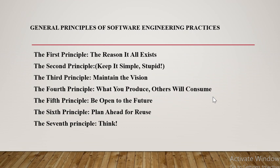To recap: the first principle is the reason it all exists; second is keep it simple and stupid — decisions should be simple but not oversimplified; third is maintaining the vision; fourth is what you produce others must consume; fifth is be open to the future; sixth is plan ahead for reuse; and seventh is think before you act. These are the seven principles of software engineering practices. Thank you.